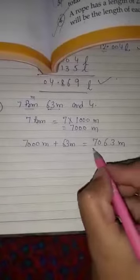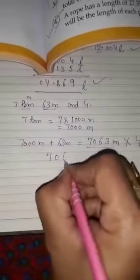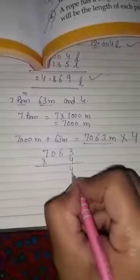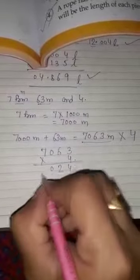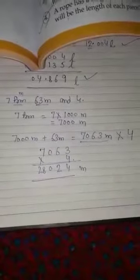Now, that statement multiply with 4. 7,063 multiply with 4. When you multiply, then our answer came: 28,024 meter.